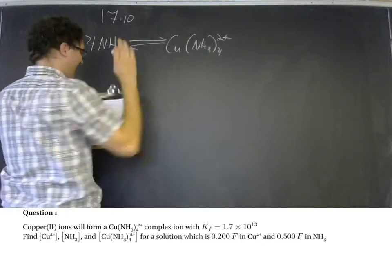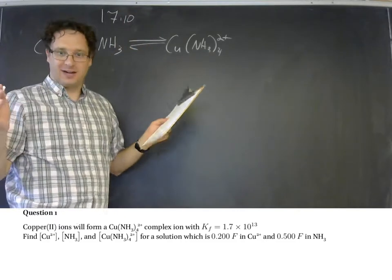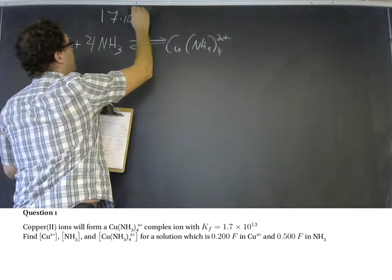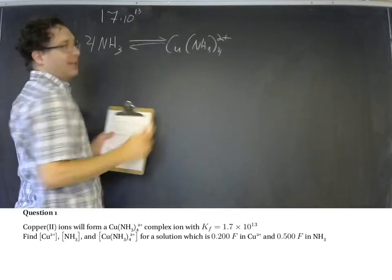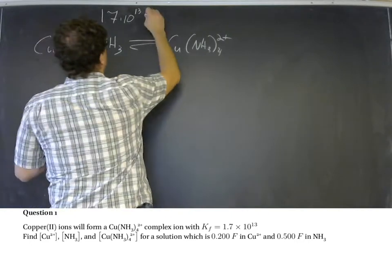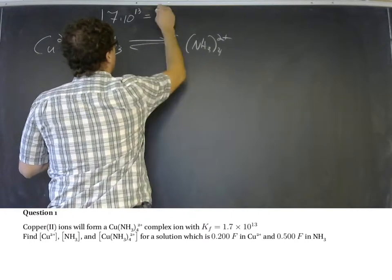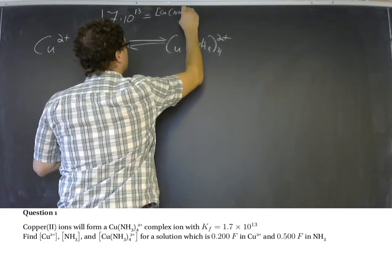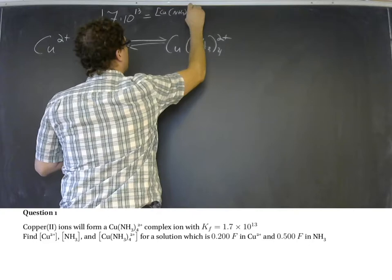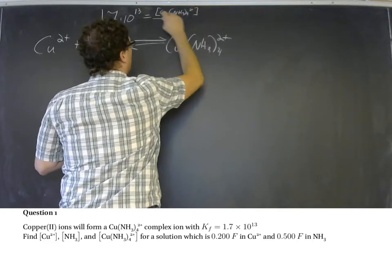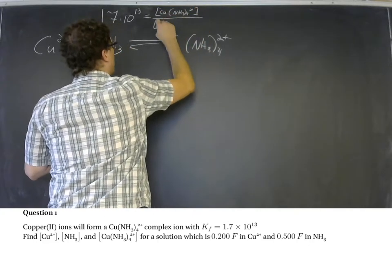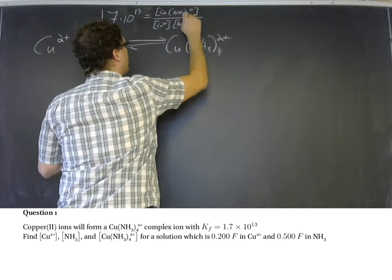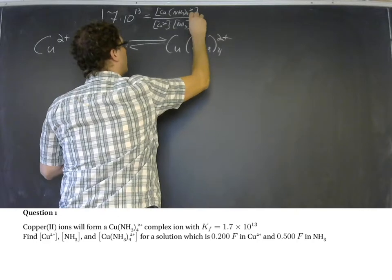And the Kf of 1.7 times 10 to the negative 13th. Sorry, see I'm in such a habit of having reactant favored reactions. That's 1.7 times 10 to the positive 13th. This one is product favored. So 1.7 times 10 to the positive 13th is going to equal the concentration of the complex over the concentration of copper ions and the concentration of NH3 ammonia raised to the fourth power.